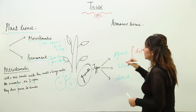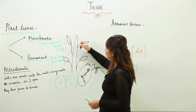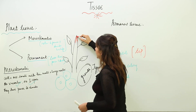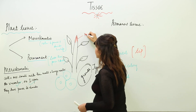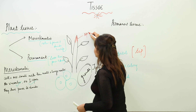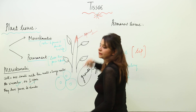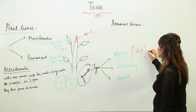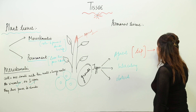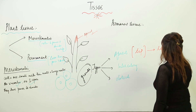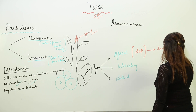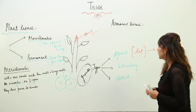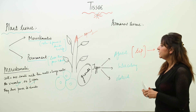Apical meristem is the one present at the tip of the plant. So this is where apical meristem is located, and its main function is to increase the length of the plant.